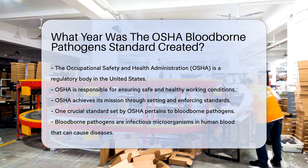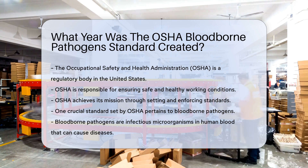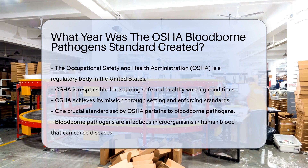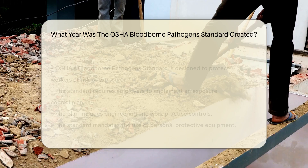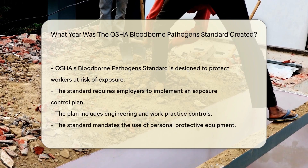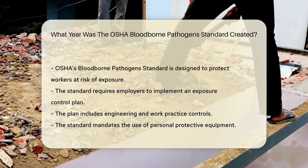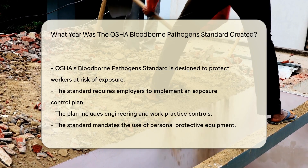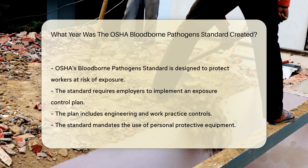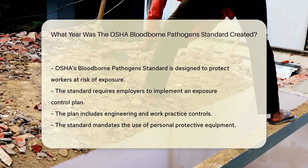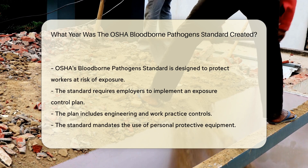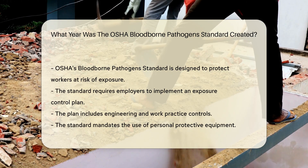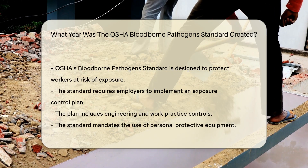Bloodborne pathogens are infectious microorganisms in human blood. They can cause diseases in humans. OSHA's Bloodborne Pathogen Standard is designed to protect workers who are at risk of exposure to blood and other potentially infectious materials.